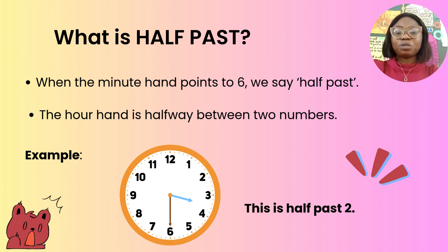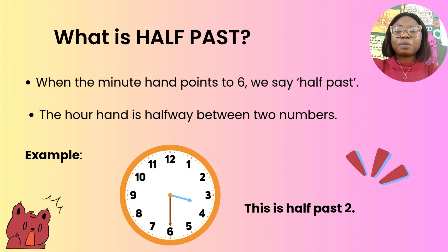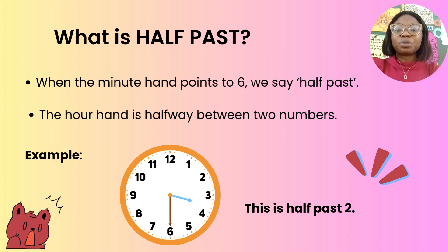For example, look at the clock on your screen. You can see the long hand is pointing to 6 — that is the minute hand — and it's called half past. And the short hand is pointing in between 3, moving from 3 to 4. So the time is called half past 3.